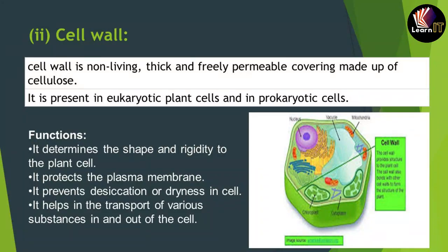The second component is the cell wall. The cell wall is non-living, very thick, and made up of cellulose. It is present in eukaryotic plant cells and in prokaryotic cells — it is a specialty of plant cells. In the picture on the right side, you can see the white lining around the structure, indicated by an arrow labeled 'cell wall.' It allows particles to move freely from inside or outside.